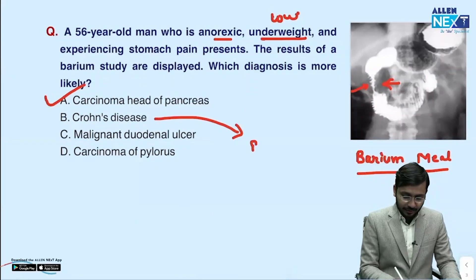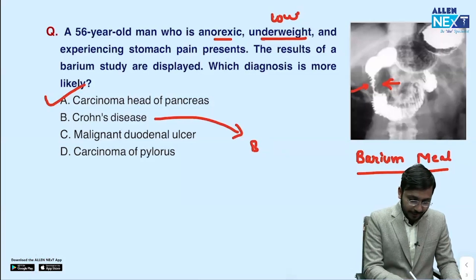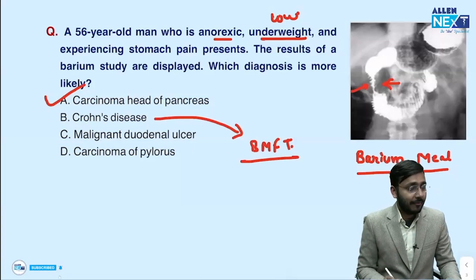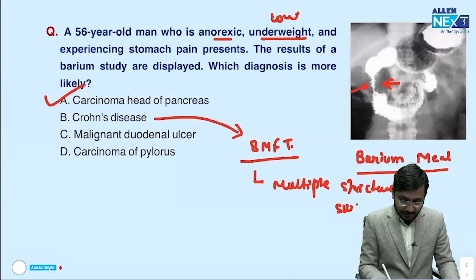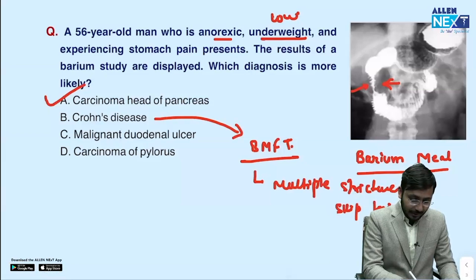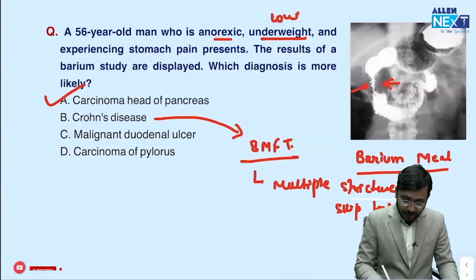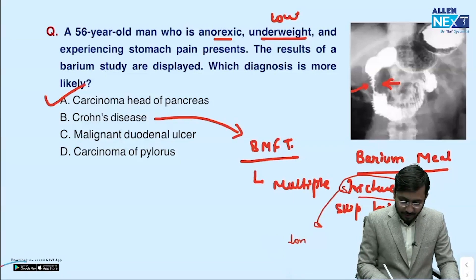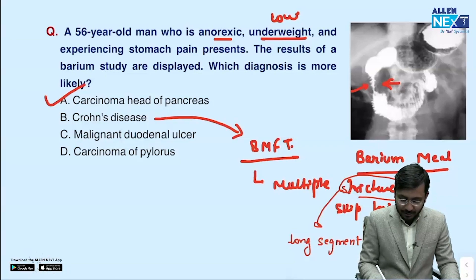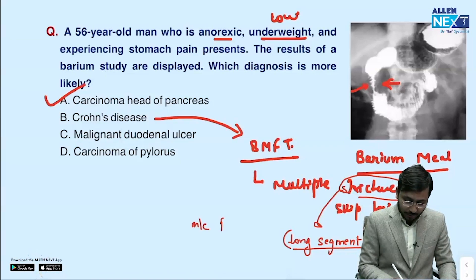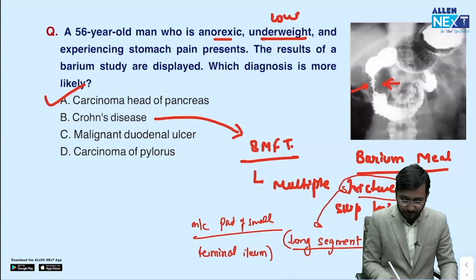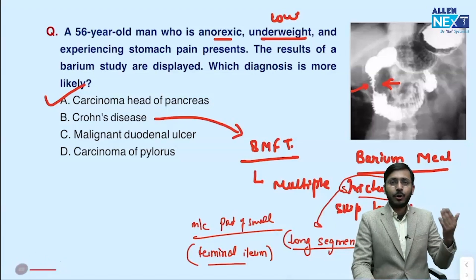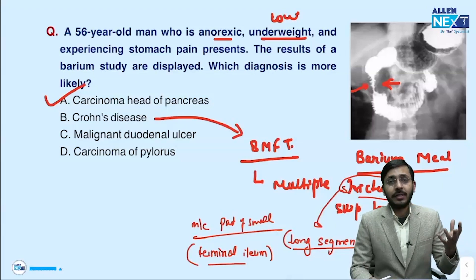If it was Crohn's disease, a BMFT — barium meal follow-through — would have been given. On a BMFT we would have seen multiple strictures, meaning skip lesions are present. In Crohn's disease we have long-segment strictures. The most common part of the small intestine affected is the terminal ileum, but any part of the bowel can be affected — stomach, esophagus, large intestine, rectum — everything can be involved in Crohn's disease.